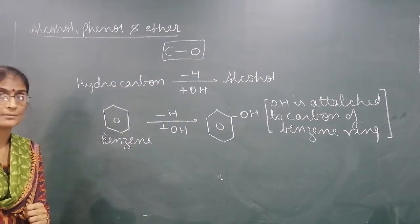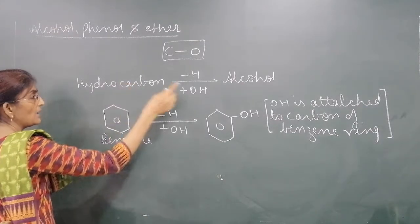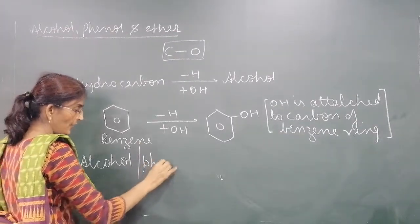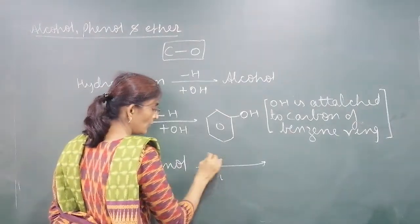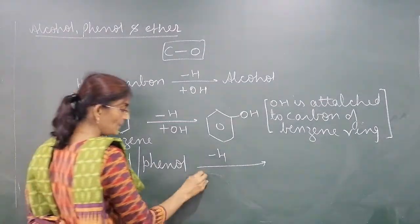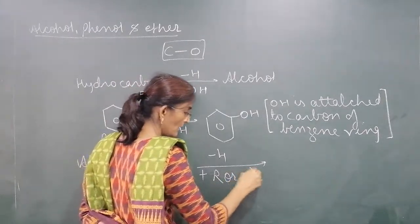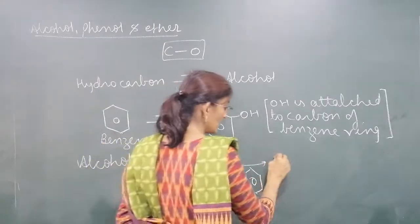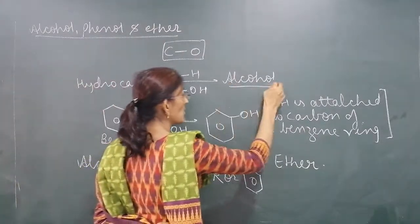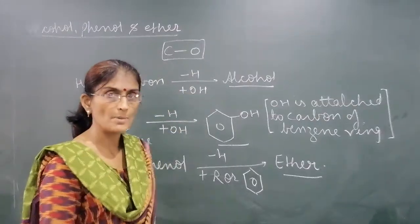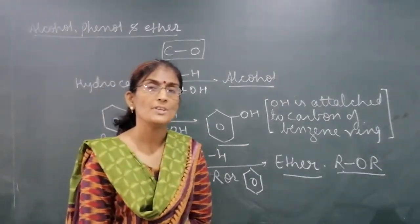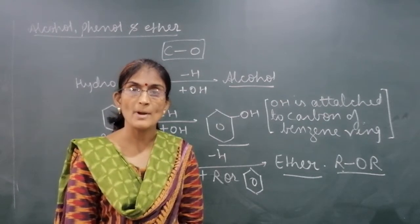The third compound of this chapter is Ether. How do we get Ether? Either from Alcohol or Phenol — one Hydrogen of the Hydroxyl group is replaced by either an Alkyl group or an Aryl group. Then we get Ether compounds. The general formula for Ether is ROR. If instead of R we have a cyclic ring, then it is called Aromatic Ether.